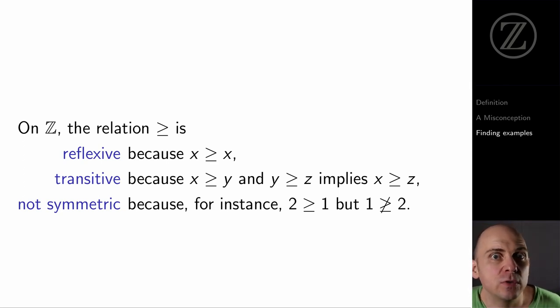Well, here's an extremely instructive example. Let's think about the greater than or equal to relation on the integers. So this is a relation which is reflexive because for any integer x, x is greater than or equal to x. It's also transitive.